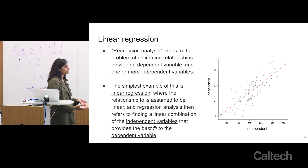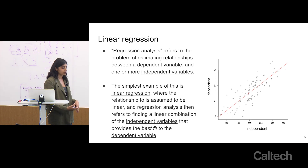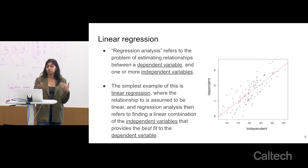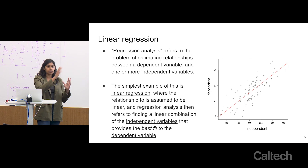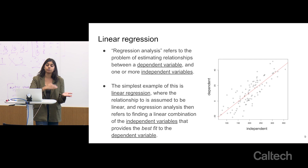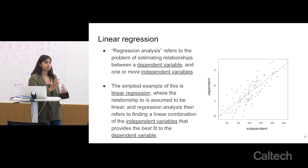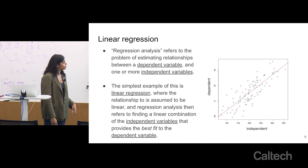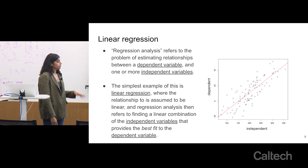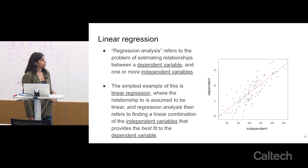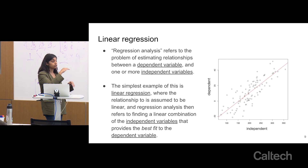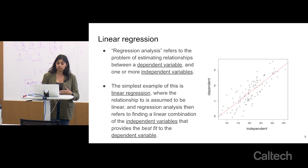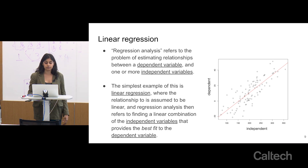There tends to be confusion over what regressing Y equals X of something versus X equals Y of something means. For example, if you transpose your cell by gene matrix and treat the observations and features differently, that means a different thing and can be more or less useful depending on the task. What you're trying to do is fit the best linear relationship between your Y and X — the dependent and the independent variable.